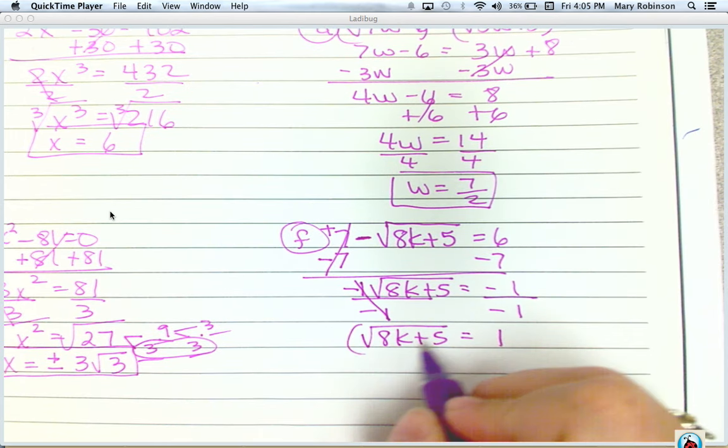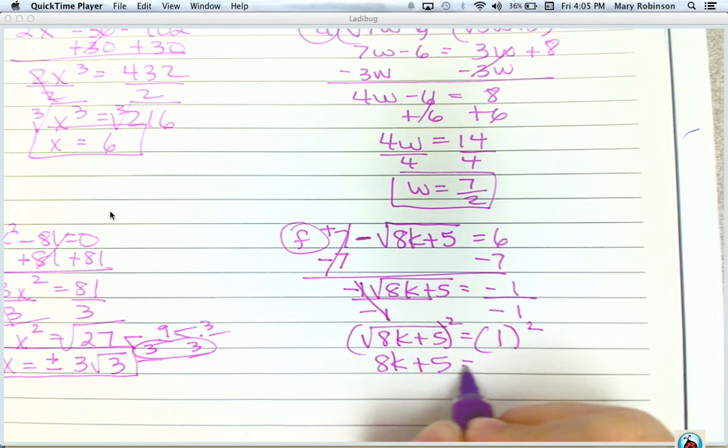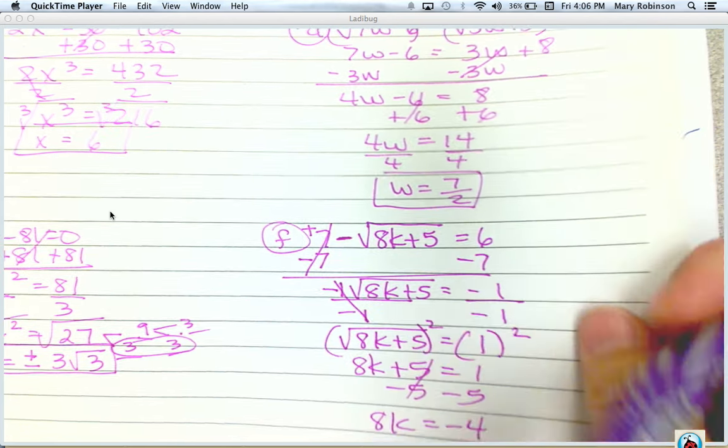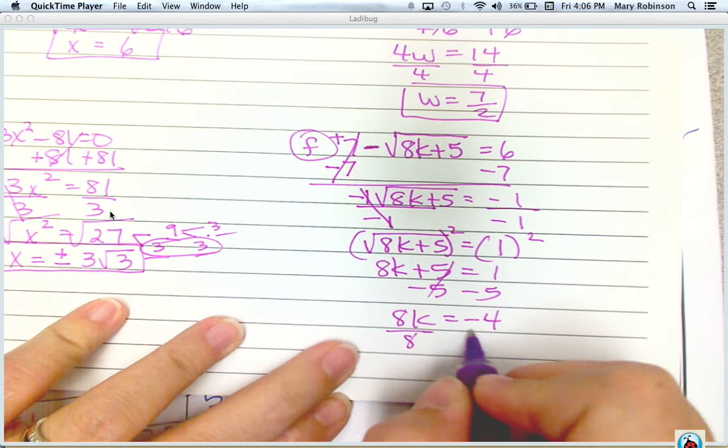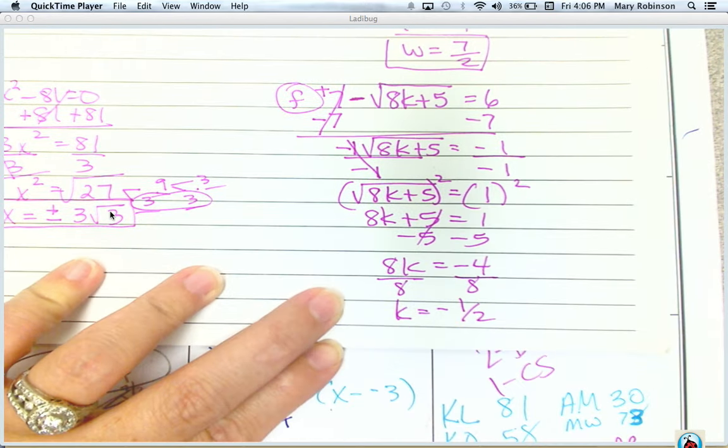Next, we would square both sides. And then just solve like normal. And I get negative 1 half.